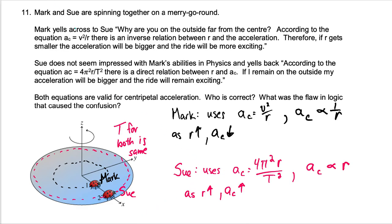So if you look at Sue's equation 4 is obviously constant, π is constant, r is not constant for either of them but t is constant. So Sue's equation looks like this, the centripetal acceleration is related to some constant times r. So if everything in this equation is constant except for r, it seems likely that Sue is right.